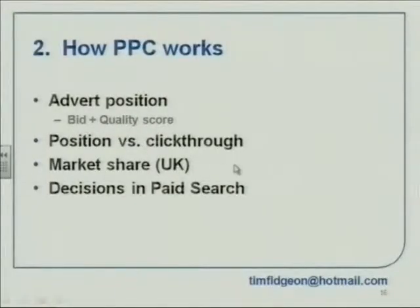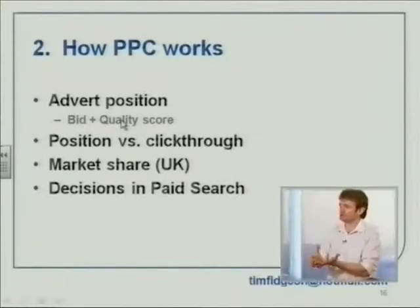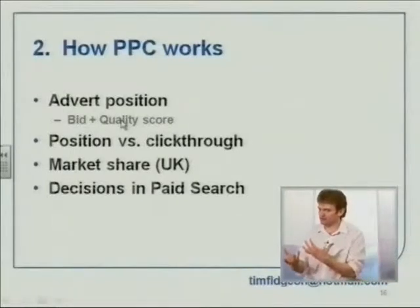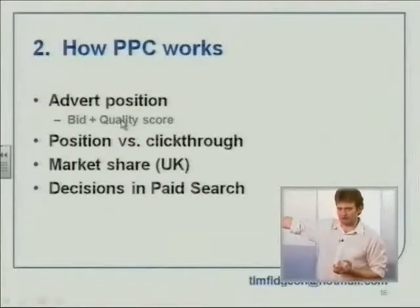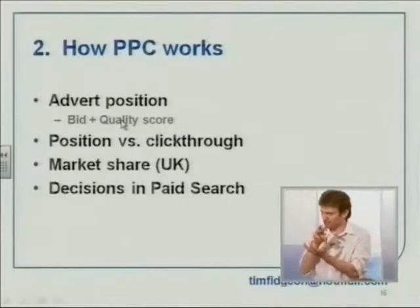So the question becomes: how do I make sure that I'm in position one, or as high as I can possibly get? The answer is a mixture of how much you are prepared to pay-per-click — which is transparent and easy — and your quality score. The quality score is less straightforward and not 100% well understood, in the same way that with SEO we'd say the basics of the algorithm are understood but exactly how it works no one really knows. Very similar with quality score: best practice is understood, but exactly the mixture and measure of it, no one knows.